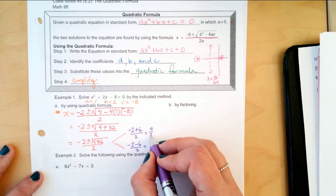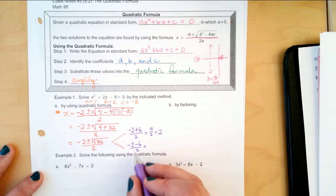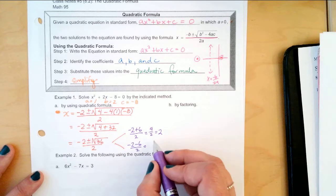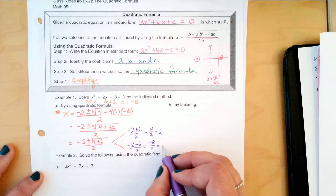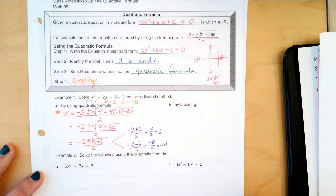That would be 4 over 2 which is 2. What's negative 2 minus 6 is negative 8 over 2 divided by 2 is negative 4. So, those are our two solutions 2 and negative 4.